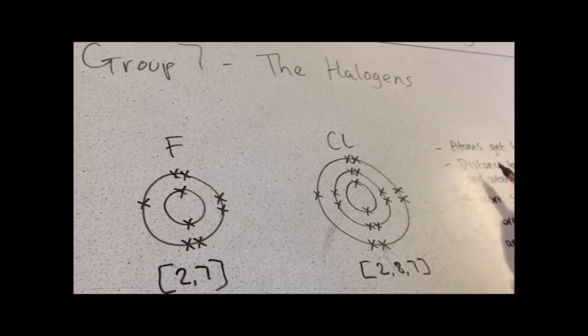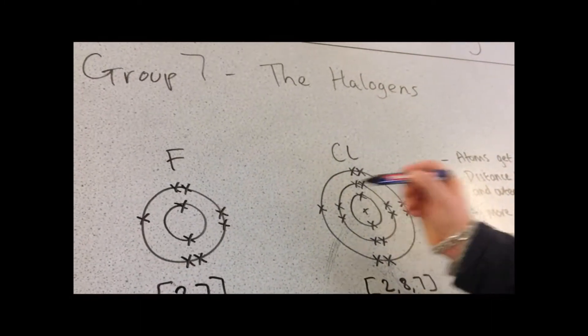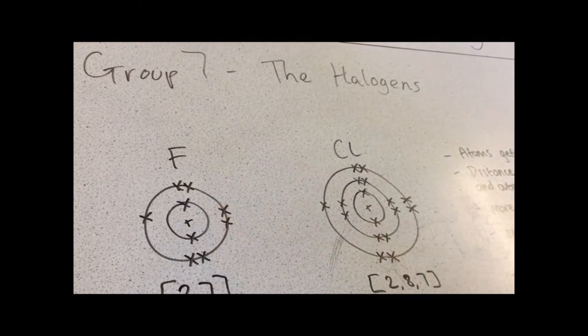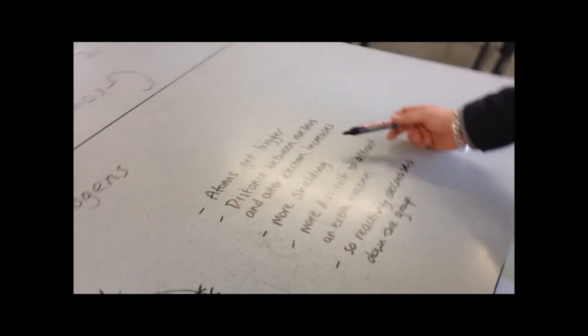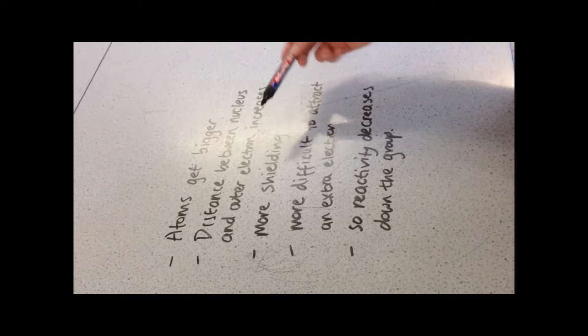As the atoms get bigger, the distance again between this positive nucleus and the outer electrons increases. Same as we mentioned with the Group 1 alkali metals, this means that there is more shielding.